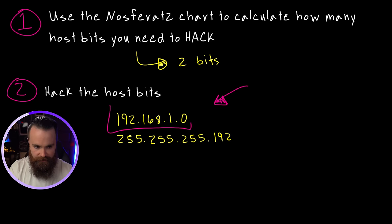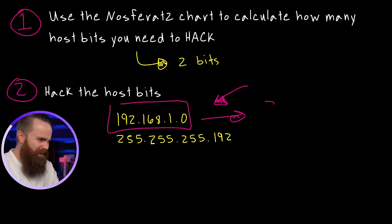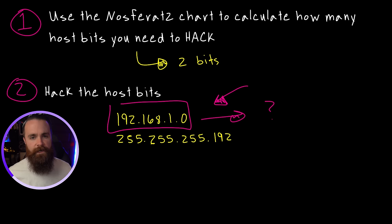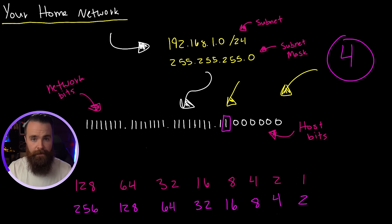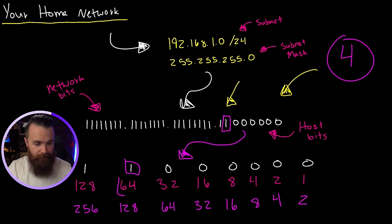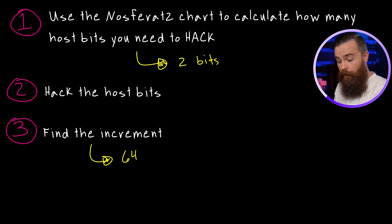There it is — our first network, new and shiny. But how many hosts are in this network? We can see the first IP address, but where does it end? What's the broadcast address? How do we find the resulting networks and their ranges? We need to find the increment, which is super easy. The increment is simply the last network bit we have. Looking at our binary subnet mask, if we draw our last octet on our chart, our increment is 64 in decimal.